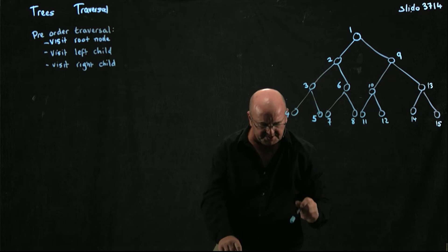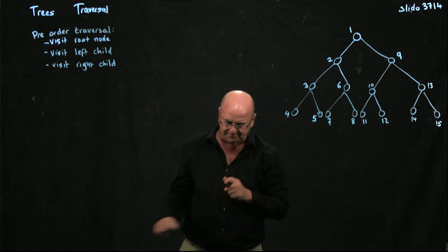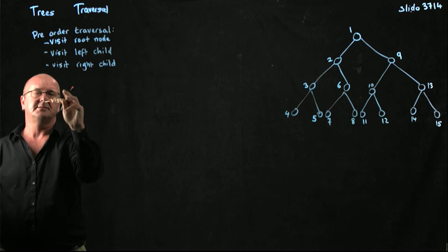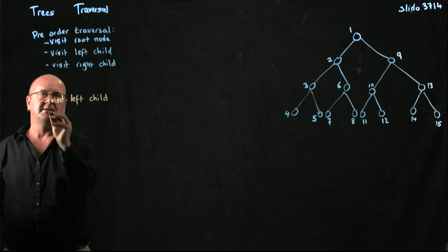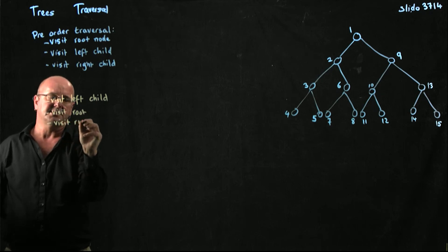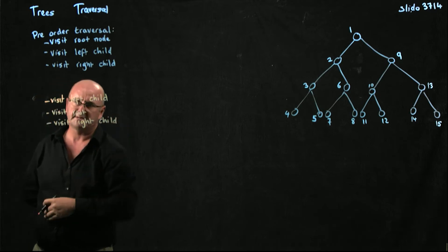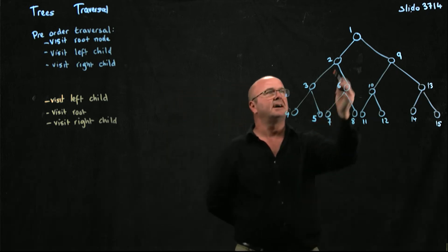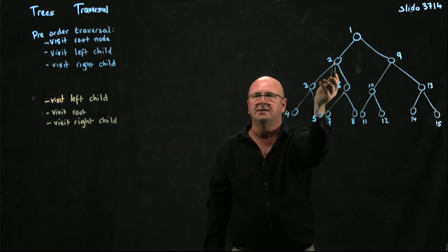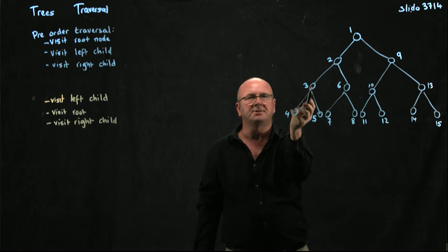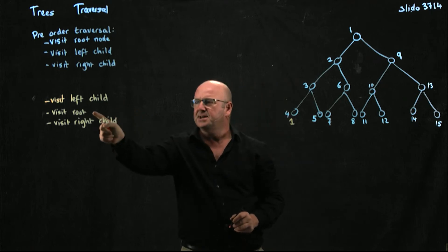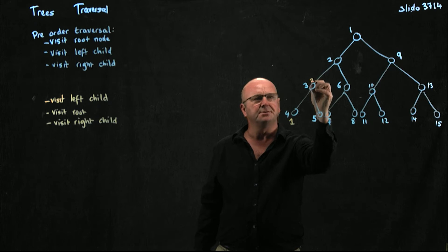I could also visit the left child, then the root, then the right child — that's left-root-right. In that case I start at the root but don't do any work yet because I have to visit the left child first. I go down to that subtree, then further down to the next, and further down to the leftmost node — that becomes number one. Now I do the root of that subtree — number two.